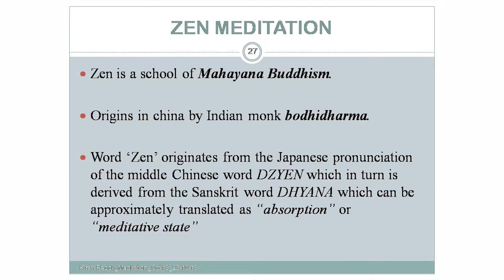Origin in China by Indian monk Bodhidharma. Word Zen originates from Japanese pronunciation of Middle Chinese word Dizian which is in turn derived from Sanskrit word Dhyana, which can be approximately translated as absorption or meditative state.